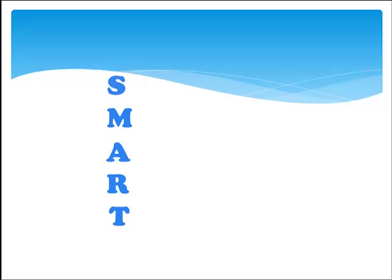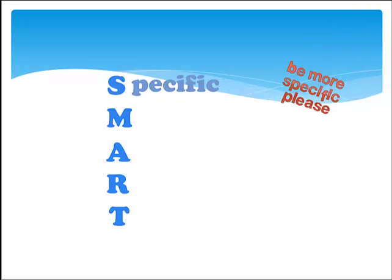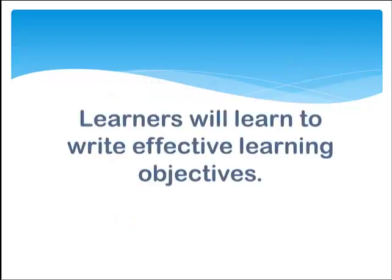S stands for specific. Be specific about the observable behavior that lets you know the objective has or has not been met. My objective — learners will learn to write effective objectives — is too vague. There's nothing about it that tells me when effective objectives have been written. I need to specify the observable behavior that learners will display.